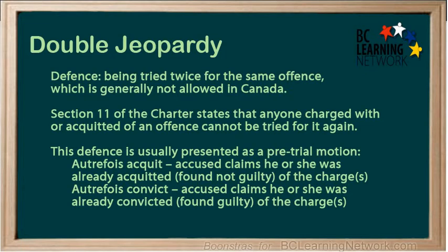Double jeopardy is being tried twice for the same offense, which is generally not allowed in Canada. Section 11 of the Charter states that anyone charged with or acquitted of an offense cannot be tried for it again. This defense is usually presented as a pre-trial motion. Autrefois acquit means the accused claims that he or she was already acquitted — not found guilty — of the charges. Autrefois convict means the accused claims he or she was already convicted — found guilty — of the charges.